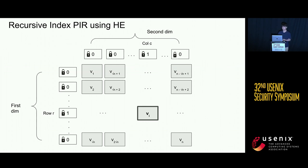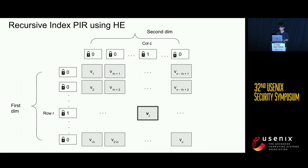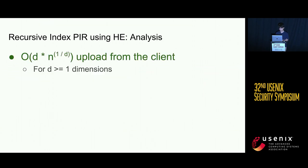The problem is that this incurs a linear-size upload from the client, which quickly becomes unscalable for sufficiently large databases. To improve upon this, we can use a concept called recursion. The idea is to model the database as a multi-dimensional hypercube. In a two-dimensional example, if the client wants to query for element vi, it constructs a query vector for each dimension and selects the corresponding row and column to retrieve vi. This is an obvious improvement because it incurs d times n to the power of one over d upload from the client, where d is the number of dimensions.